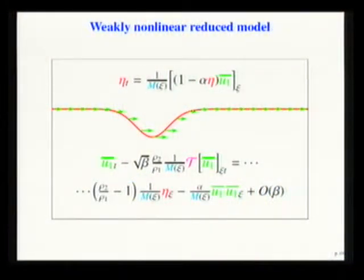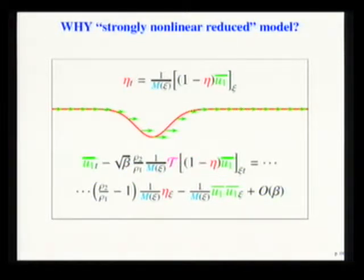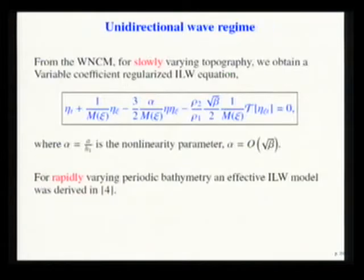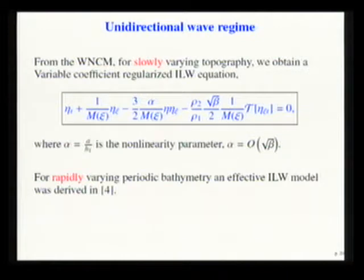A weakly nonlinear version simplifies the function to which the Hilbert transform is applied, and it is easier to implement numerically. In the unidirectional wave regime, in the case of a slowly varying topography, we are also able to obtain a variable-coefficient regularized intermediate long wave equation. We have a variable coefficient that is independent of time.